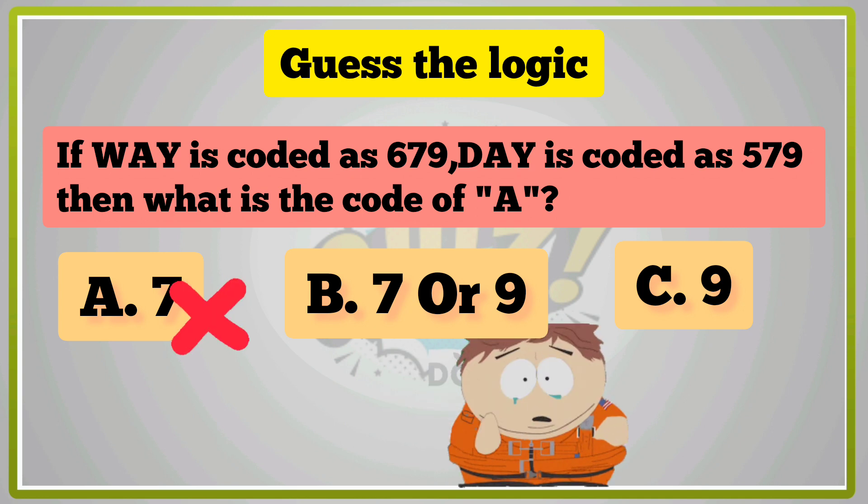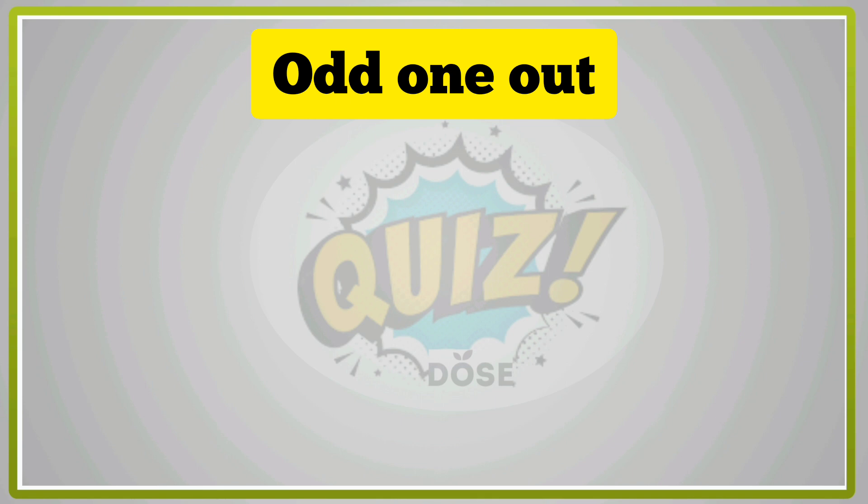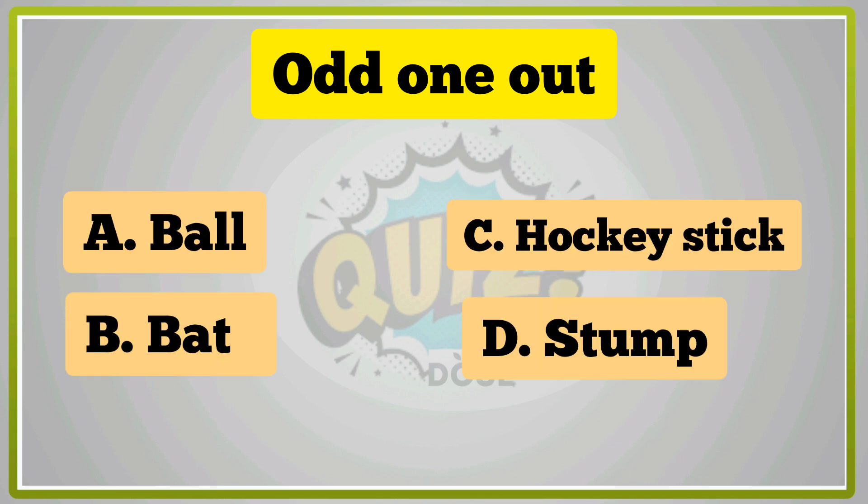A is wrong answer. B, 7 or 9 is right answer. Now odd one out question. A, Ball. B, Bat. C, Hockey stick. D, Stump. C, Hockey stick is right answer.